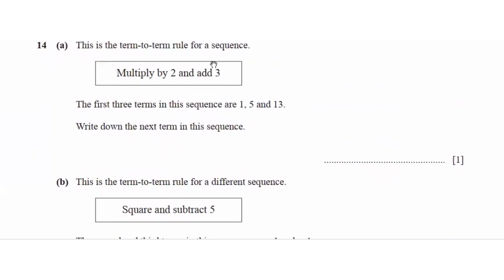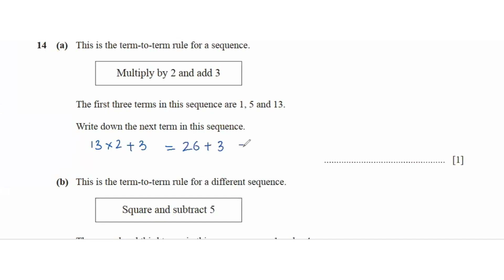Question 14: the term-to-term rule for a sequence is multiply by 2 and add 3. The first three terms are given; find the next term. Pick the third term, which is 13, multiply by 2 to get 26, then add 3. So 26 plus 3 is 29.